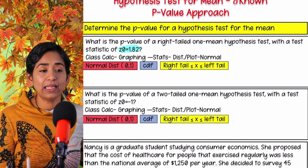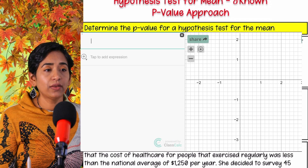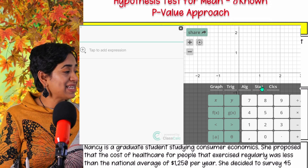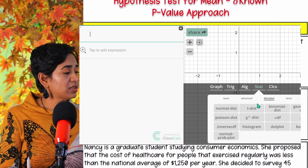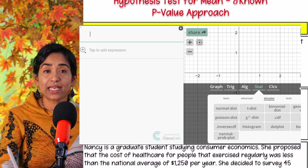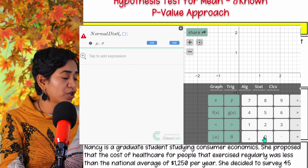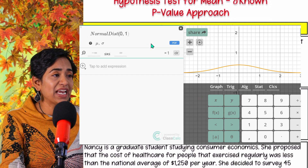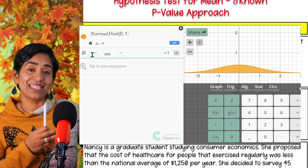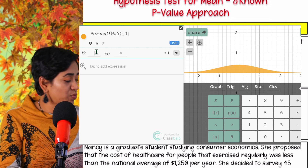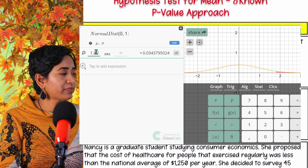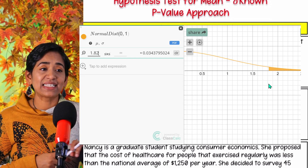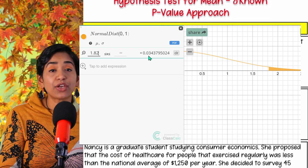Let me pull up my class calc. I'm in my graphing calculator. I will pull up stats, distribution, and plots. You will go to your normal distribution. For a standard normal, the mean is 0 and the standard deviation is 1. Click on CDF. They're asking for the right-tailed, so I plug in on the left-hand side. My value is 1.82. As you can see, it is a right-tailed test, and my p-value is 0.0344.